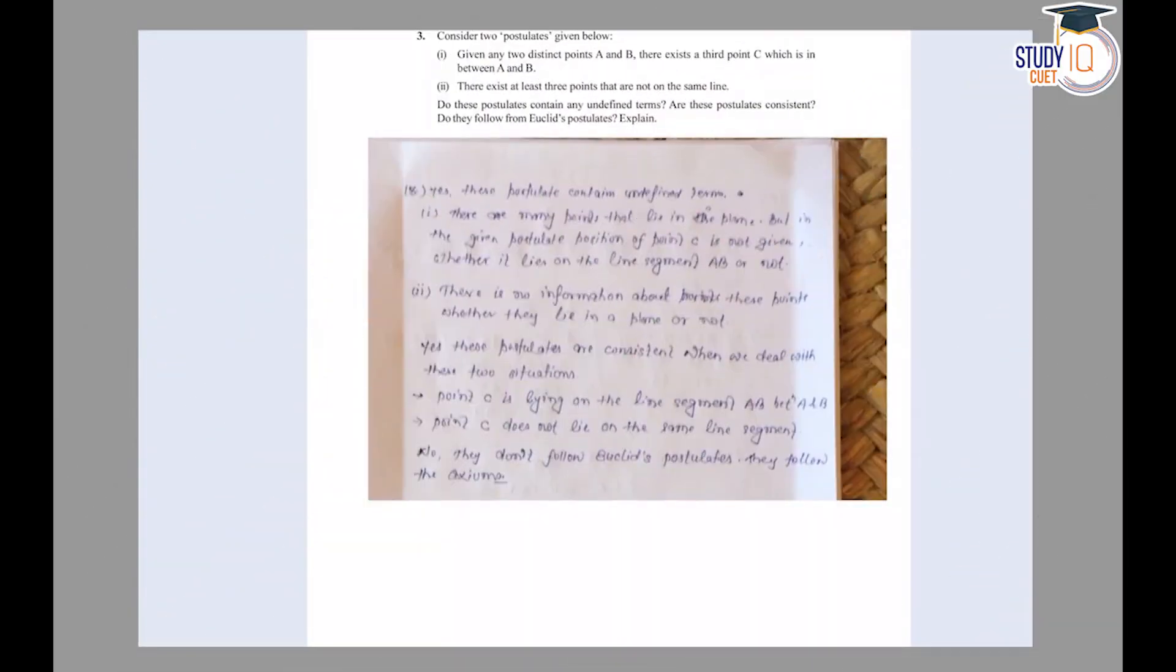Hello students, this is NCERT Maths class 9, exercise 5.1, question number 3. The question is: consider two postulates given below. Given any two distinct points A and B, there exists a third point C which is in between A and B.